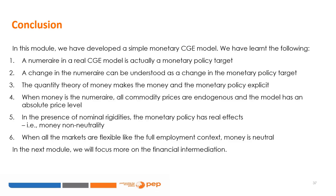In this module, we have developed a simple monetary CGE model. Key takeaways: one, a numeraire in a real CGE model is actually a monetary policy target; two, a change in the numeraire can be understood as a change in the monetary policy target; three, the quantity theory of money makes money and monetary policy explicit; four, when money is the numeraire, all commodity prices are endogenous and the model has an absolute price; five, in the presence of nominal rigidities, monetary policy has real effects — i.e., money non-neutrality; six, when all markets are flexible as in the full employment context, money is neutral. In the next module, we will focus on financial intermediation, considering a simple banking system with central and commercial banks, deposits and loans, etc.